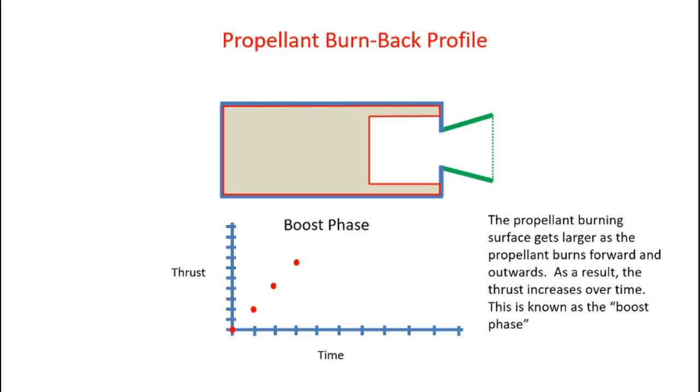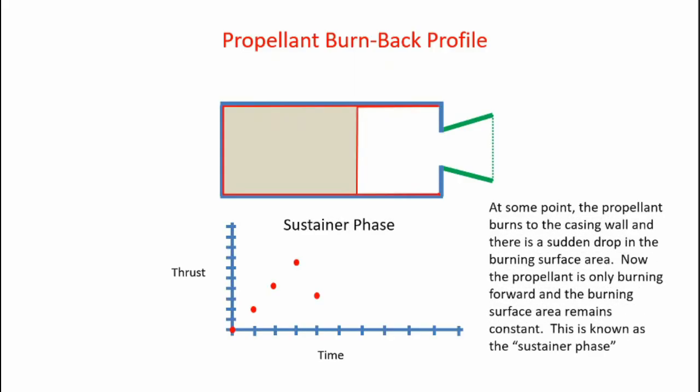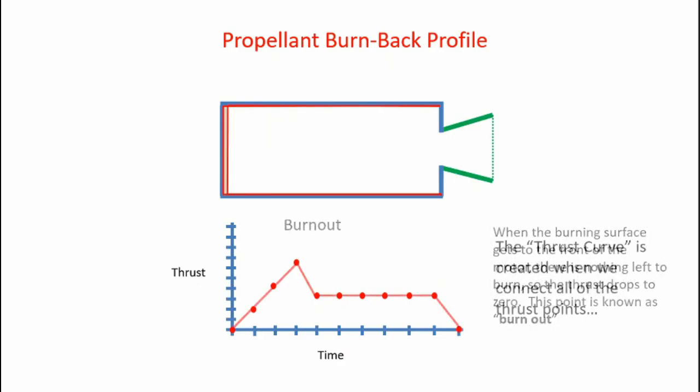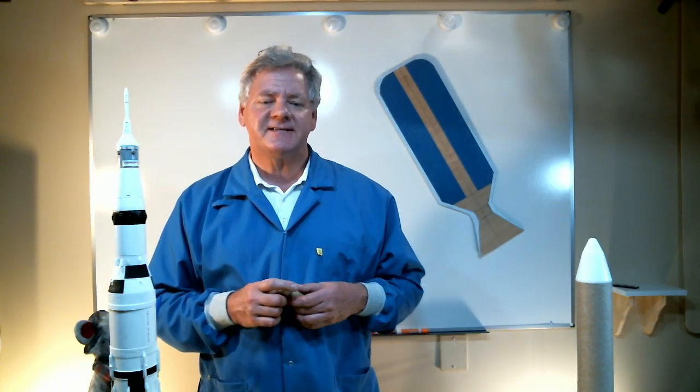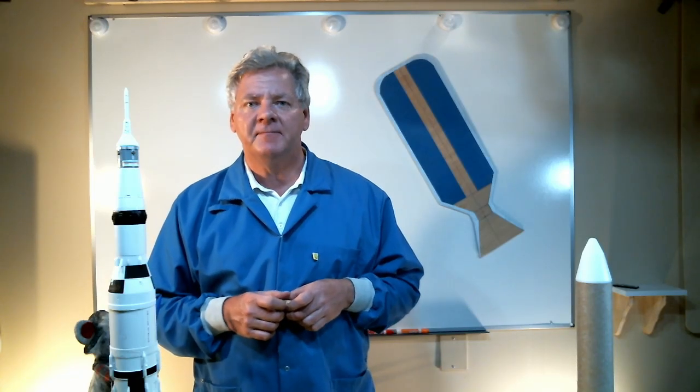This increases the pressure inside the rocket motor and also increases the thrust. Again, the surface area increases as it burns until eventually it burns to the casing wall. Now the surface area drastically drops at this point, and the thrust drops off as well. You can see that in the points on the thrust curve. And then the motor burns from the end towards the front of the motor. This is known as a sustainer phase of the motor burn. Eventually the propellant burns out to the forward end of the casing, and the thrust drops to zero. Now when I connect these points with a line, this creates the thrust curve, which is thrust versus time.